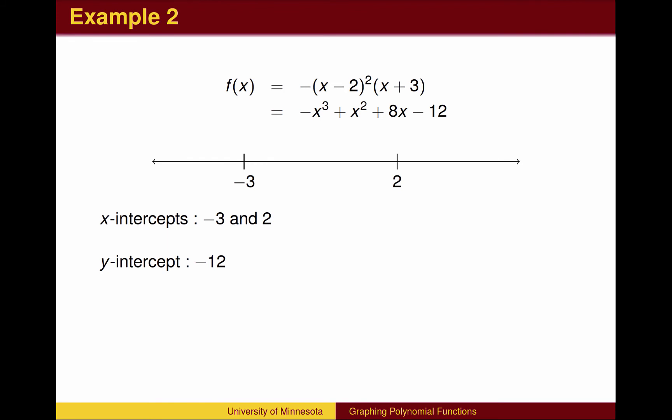Here is another example. There are two places where the function equals zero. In other words, there are two x-intercepts. Notice that one of the factors is squared, and so in essence is two identical factors. By plugging zero in for x in the expanded form, we see that the y-intercept is -12.